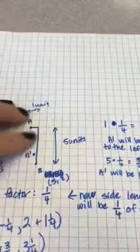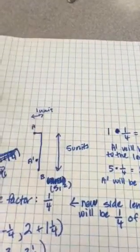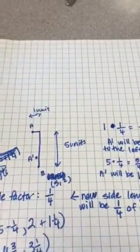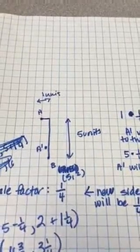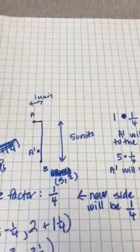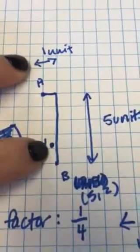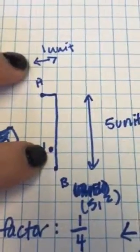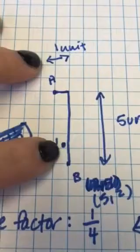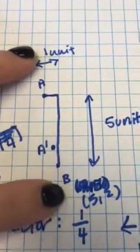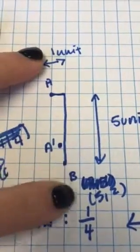So that means A prime is going to be one and one-fourth units above B instead of five. This vertical distance of five units is going to decrease to one-fourth of what it currently was. Just approximating on this graph, this is where I think A prime would be. Now to actually figure out those coordinates, we could do it two ways, and the way I did it is starting from what I know about B.